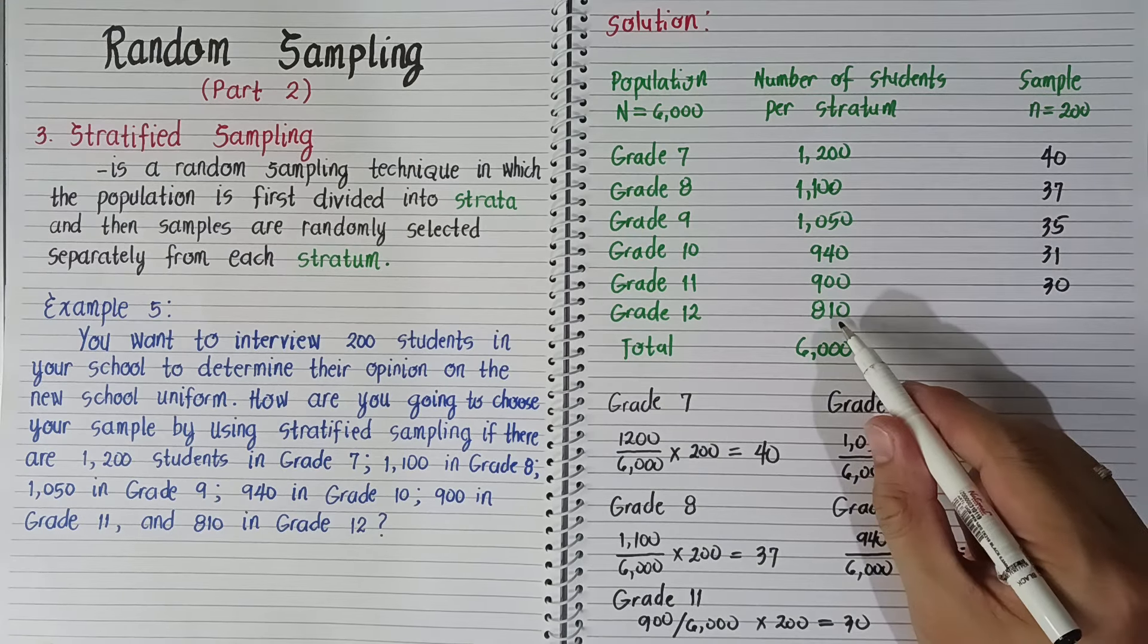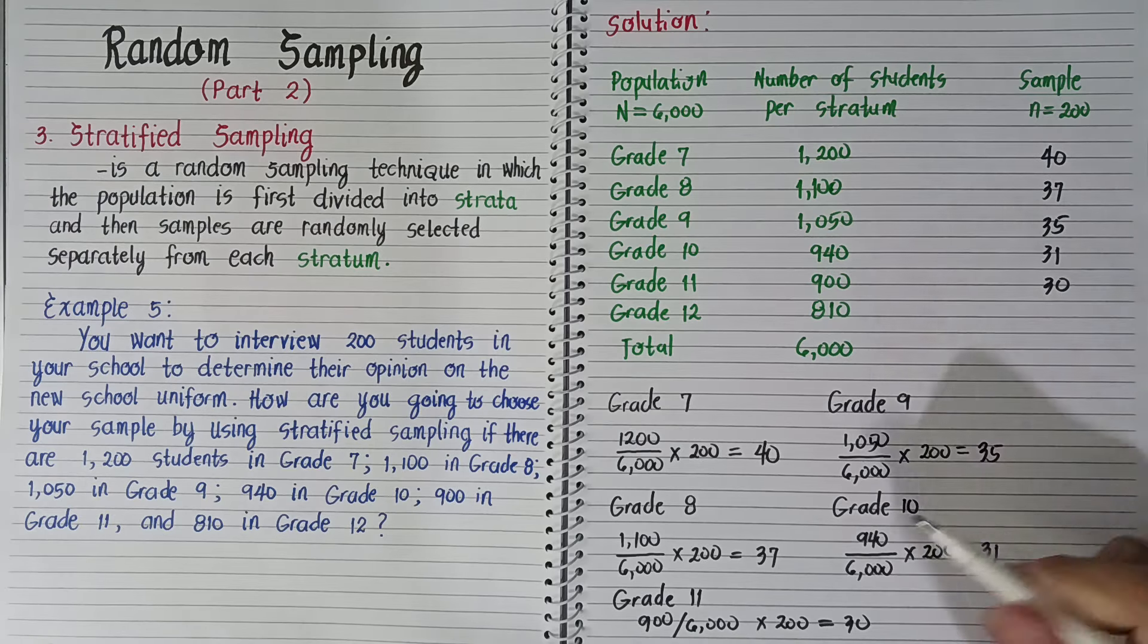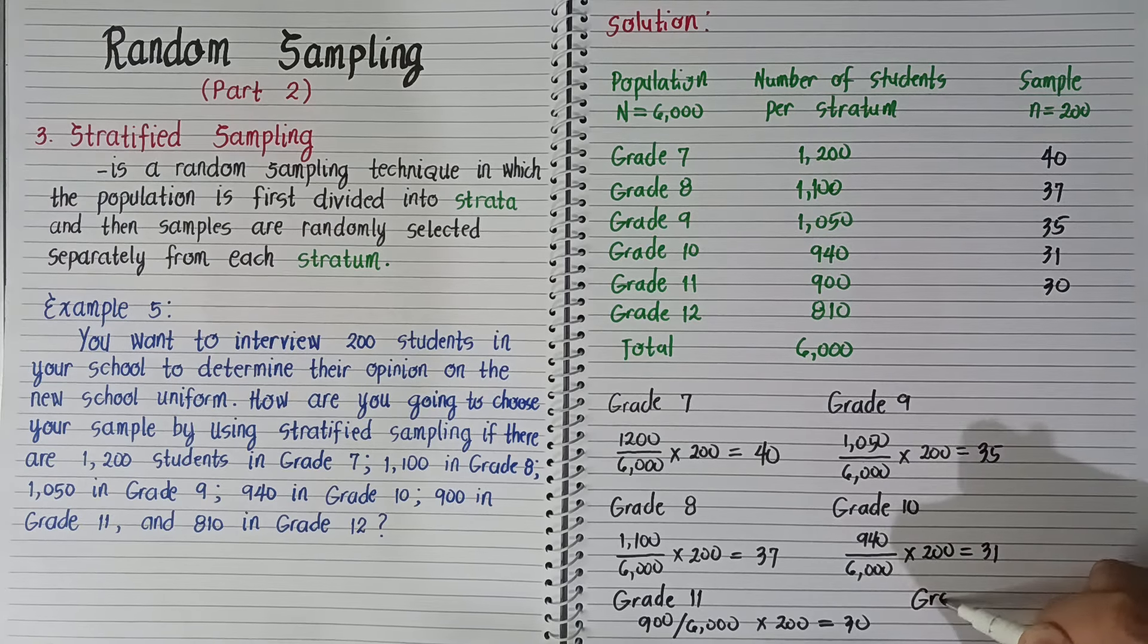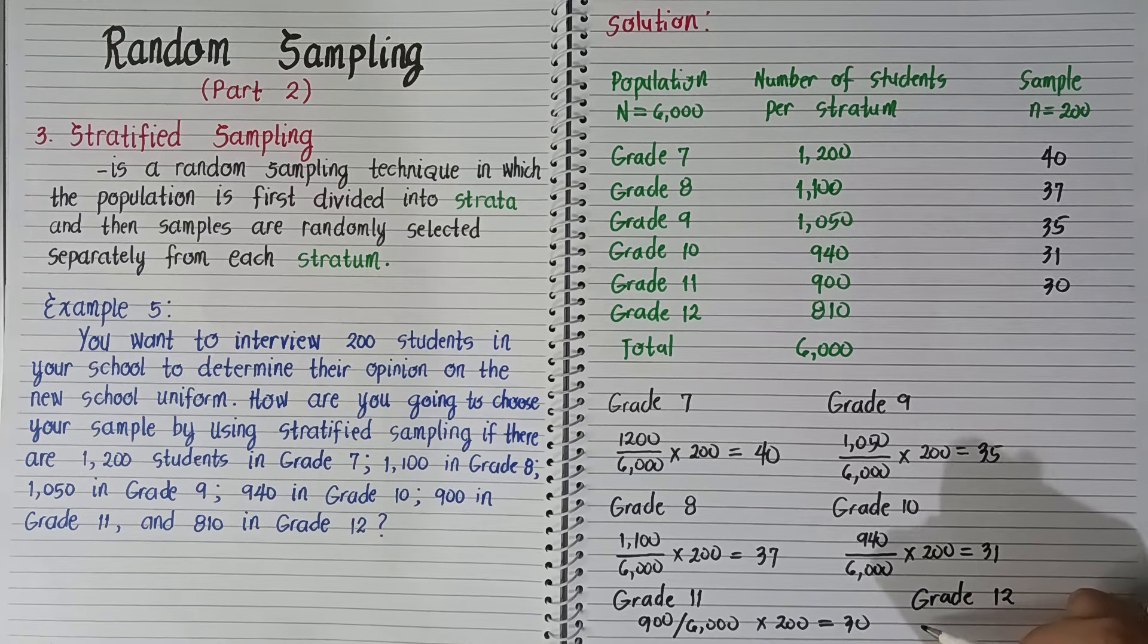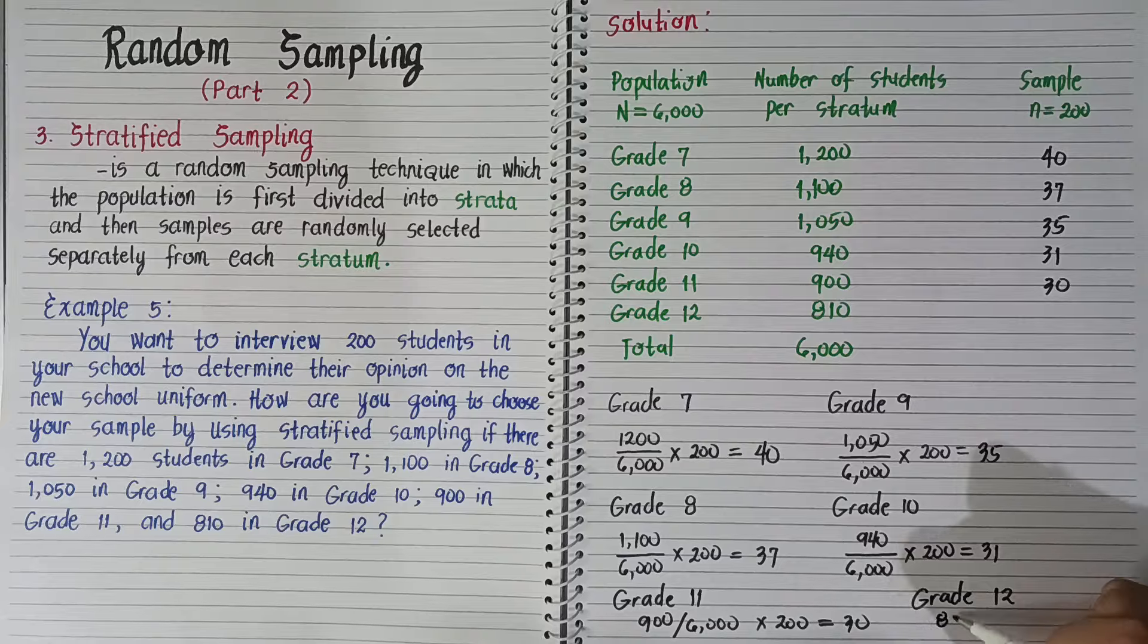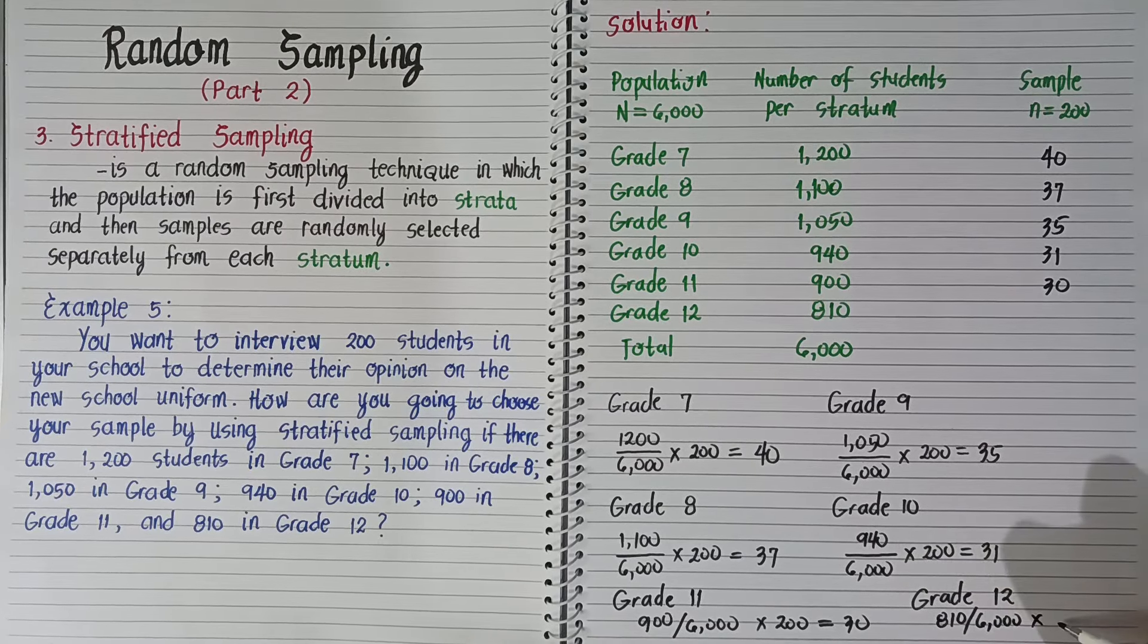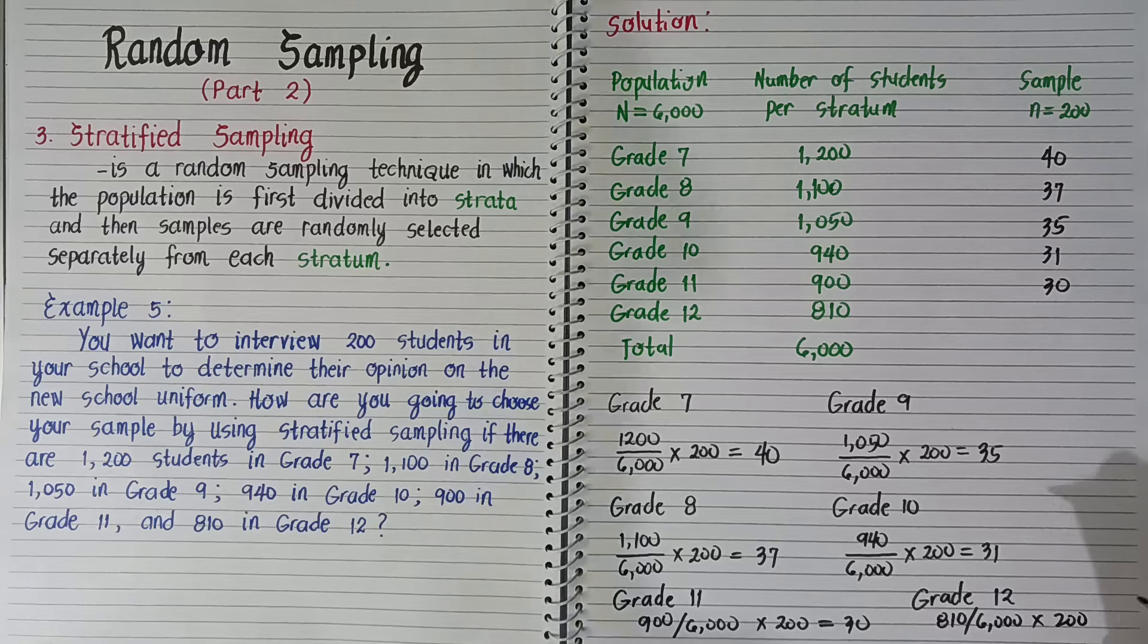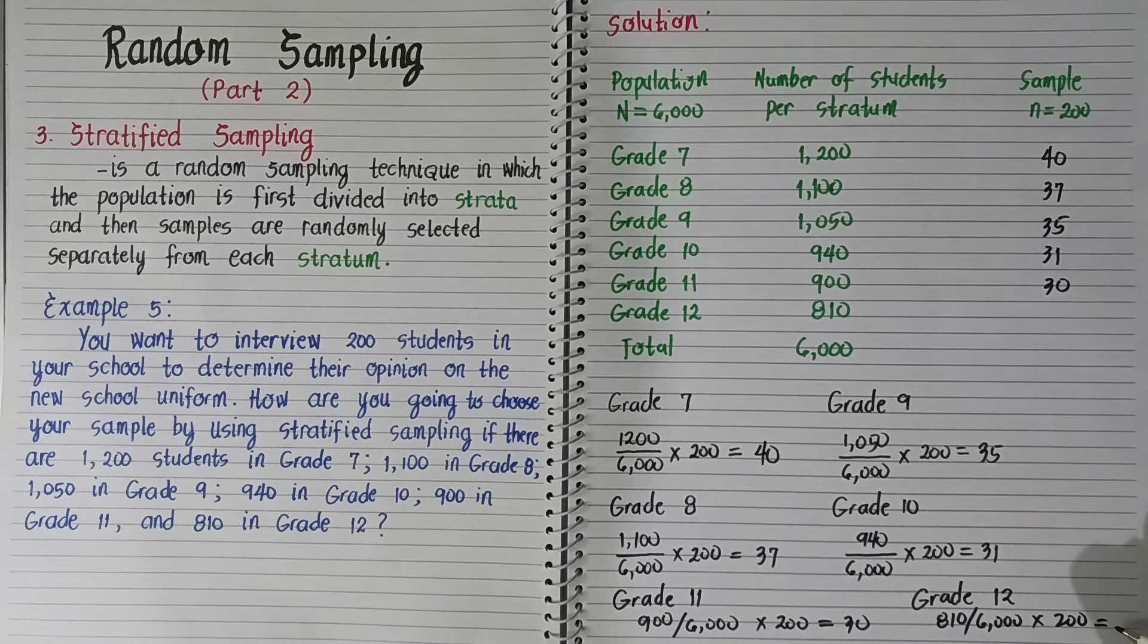Since grade 12 has 810, we should get a smaller sample. For grade 12, 810 divided by 6,000 times 200 equals 27.